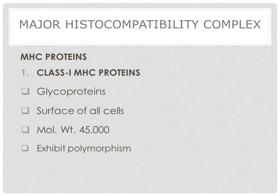The molecular weight of class 1 MHC protein is approximately 45,000. It consists of one glycoprotein chain and one beta-2 microglobulin chain. This is an important structural difference from class 2 MHC. Class 1 MHC also exhibits polymorphism, which is important in recognition of self and non-self antigens.